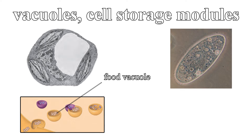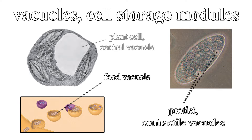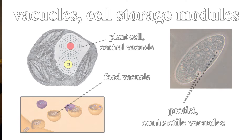Many freshwater protists have contractile vacuoles, which pump excess water out of the cell in order to maintain a suitable ion concentration. Plant cells usually have a massive central vacuole that stores a sap full of inorganic ions such as potassium and chloride.